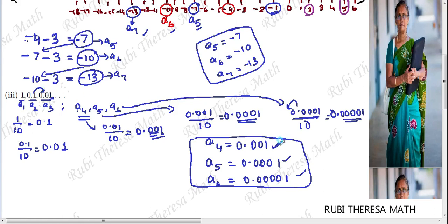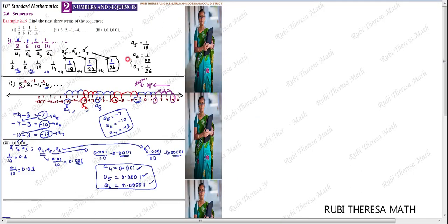So expressing our answers: A4 = 0.001, A5 = 0.0001, A6 = 0.00001. The pattern is that each term is divided by 10 — the decimal place moves one position to the left each time. So these are the next three terms of the third sequence.